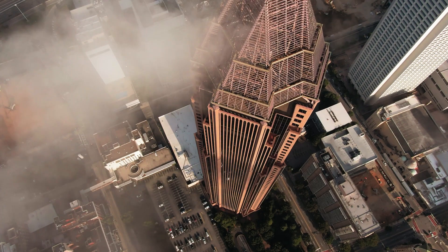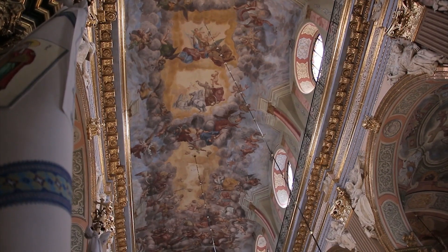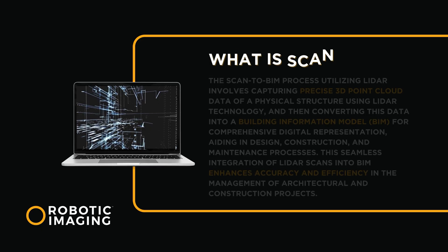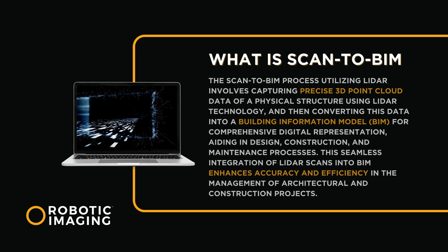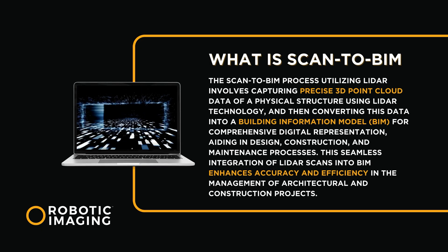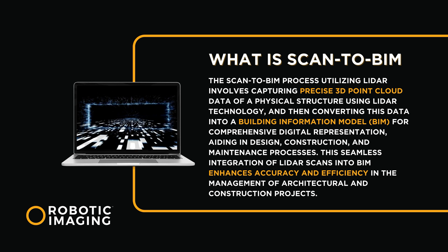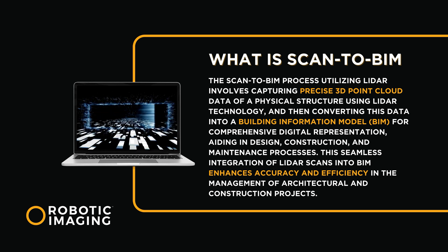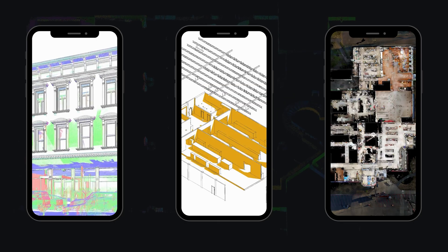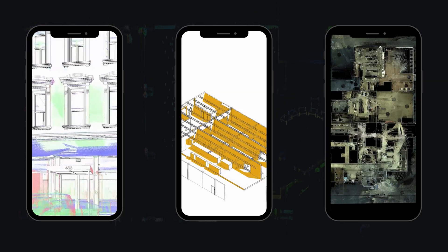What is Scan2BIM? It is a technique that utilizes advanced technology to capture detailed, high-resolution scans of physical structures such as buildings, construction sites, or heritage sites. It is a process that involves translating laser-scan point cloud digital models into Building Information Modeling, or BIM, platforms, which then integrate the data into a 3D site or building model for development, design, construction, and all sorts of other teams.